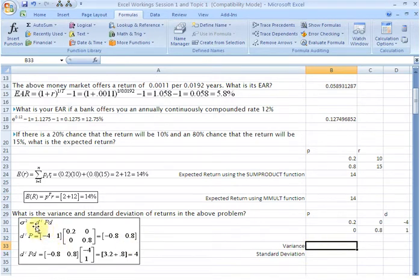formula that we need to apply. The formula is D transpose times P times D. Now what is D? D is this vector here which gives us the deviations of returns from the mean return or the expected return. So